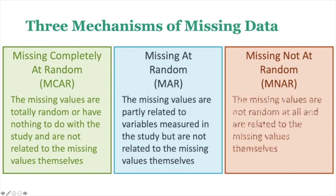Missing not at random (MNAR) is where the missing values are not random at all and are related to the missing values themselves. This is extremely problematic because it tells you that your missing values are missing for reasons you cannot know — because they are missing. Your results have a high chance of being biased because the missing values are missing with information that you absolutely need in order to have unbiased results.